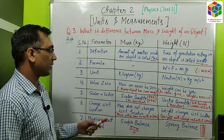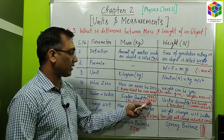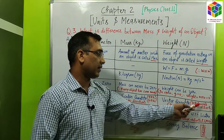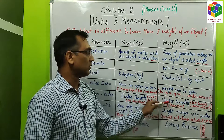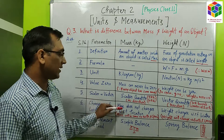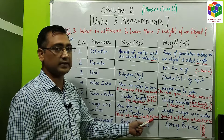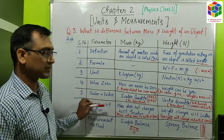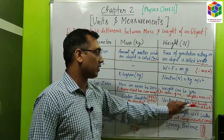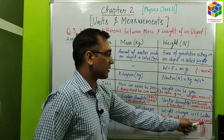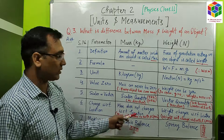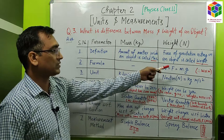The next difference is scalar or vector quantity. Mass is a scalar quantity — for example, 5 kilogram potato, 10 kilogram onion — there is no direction specified for mass. But for weight, the direction is specified, like 10 Newton downward towards the center of the earth. So weight is a vector quantity and mass is a scalar quantity. Regarding change with respect to location: mass does not change with location — mass remains constant everywhere. But weight changes with location because the weight formula contains the gravitational constant g, which may vary in space. Therefore the weight will also change, but mass does not change with location as it has no gravitational term in its definition.